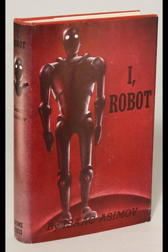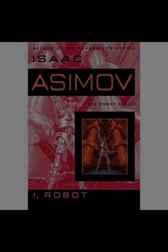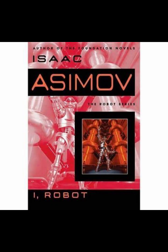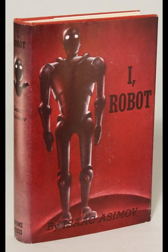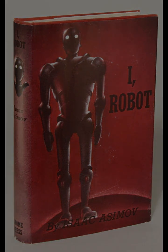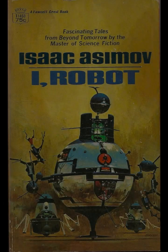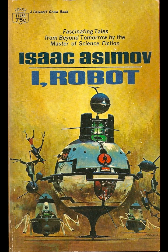In Robby, a robot's loyalty to a young girl leads to questions about emotional bonds between humans and robots and the nature of human attachment. The story illustrates the potential for robots to develop deep connections with humans, raising questions about the nature of relationships and emotional dependency. In Runaround, Asimov explores the idea of conflicting laws and how a robot's interpretation of its programming can lead to unexpected outcomes, highlighting the need for clear and precise programming.